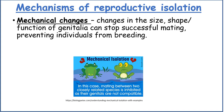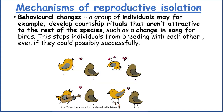Mechanical isolation involves changes in the size, shape or function of the genitalia that can stop successful mating or prevent individuals from breeding. Behavioural isolation occurs when a group of individuals develops courtship rituals that aren't attractive to the rest of the species — such as a change in song for birds — stopping individuals from breeding with each other, even if they could potentially do so successfully.